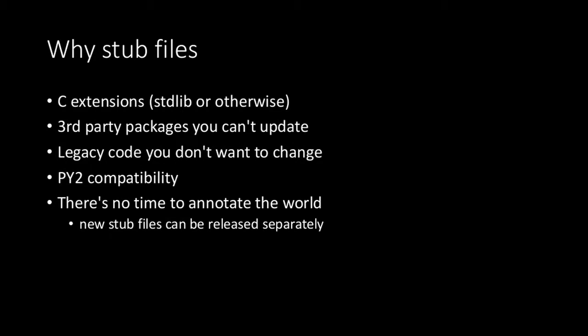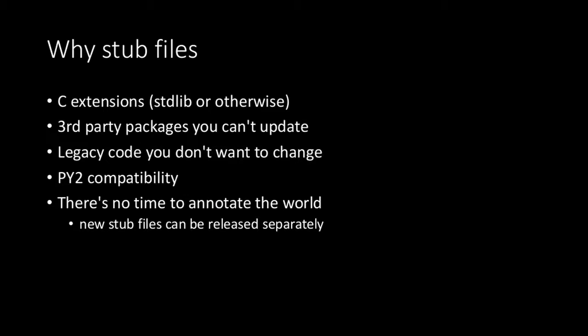We also need stub files for C extensions and the stdlib, because we're not going to add type hints into all of the stdlib right away. This is gradual typing — every now and then there will be more documentation and more type hints, but it won't happen in a day. Stub files may also help for legacy code we don't want to change, and for Python 2 since it does not support annotations.